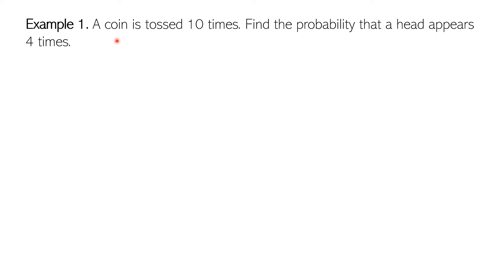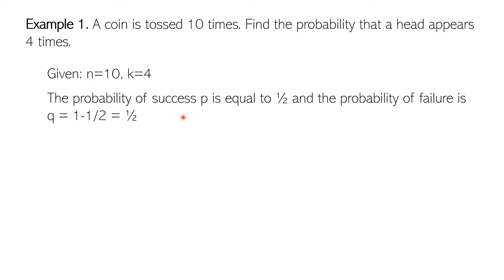For the first example: a coin is tossed 10 times. Find the probability that heads appears 4 times. So n here is 10 — that's the number of trials, the number of times you're tossing the coin. K is 4, because you want heads to appear 4 times. The probability of success P is simply 1/2, because you only have two possible outcomes: a head and a tail. So 50% for a head, and Q equals 1 minus 1/2, which is also 1/2.